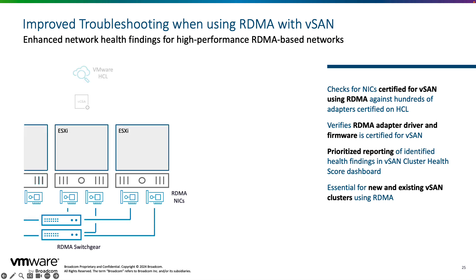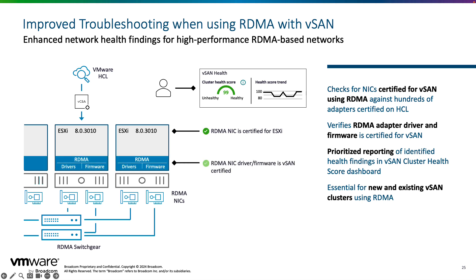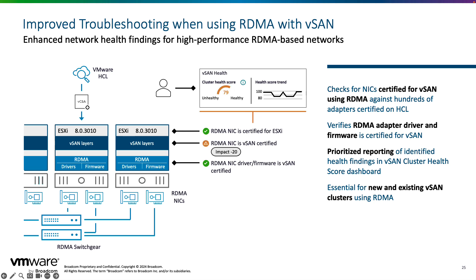Using RDMA in a distributed storage system like vSAN can provide even better performance for guest virtual machine workflows and reduce the strain on host resources. vSAN 8 Update 3 improves tracking and monitoring of RDMA networks for optimal performance. Health findings now do real-time health checks against the hardware compatibility list to make sure you're using certified network interfaces for RDMA and that the NIC driver and firmware is vSAN certified. If anything does not pass, it will be presented in the vSAN cluster health scoring dashboard, giving you priority to address it quickly. This improvement will aid any new and existing vSAN clusters using vSAN over RDMA.